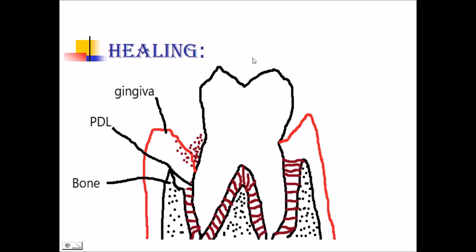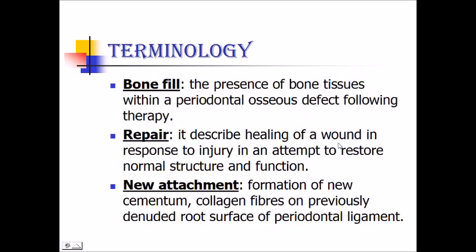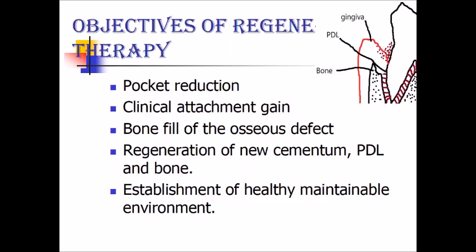When we do periodontal regenerative surgery, we want bone formation, formation of periodontal ligament fiber, and gingival tissues. Other important terminology: bone fill is the presence of bone tissues within the periodontal osseous defect following periodontal therapy. Repair describes healing of a wound in response to injury in an attempt to restore normal structure and function. New attachment is the formation of new cementum and collagen fibers on a previously denuded root surface.